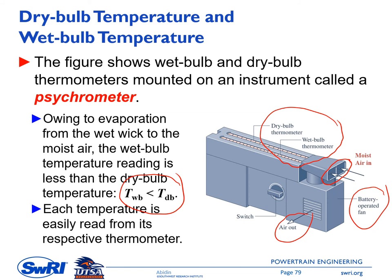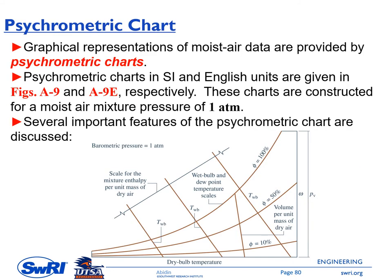This apparatus for measuring both temperatures is called a psychrometer. Moist air is drawn into the system by a battery-operated fan, and both dry bulb and wet bulb thermometers are read. The next topic is psychrometric charts — graphical representations of moist air data found in the textbook appendix as Figures A-9 (SI units) and A-9E (British units). These charts are constructed for a moist air mixture pressure of one atmosphere.